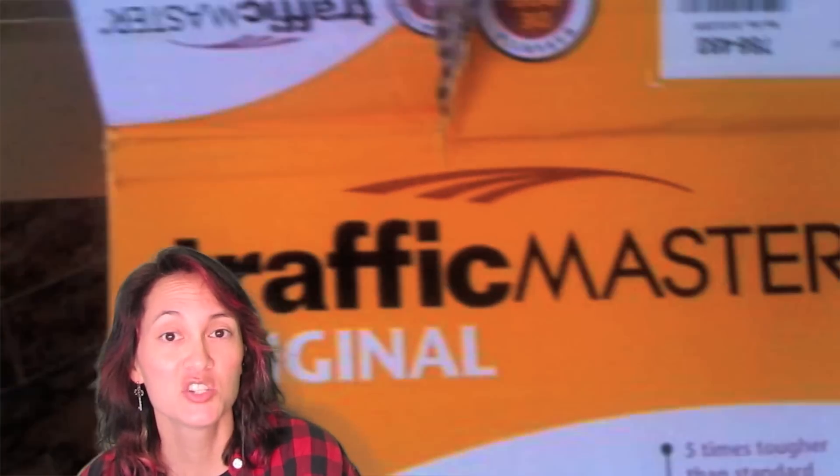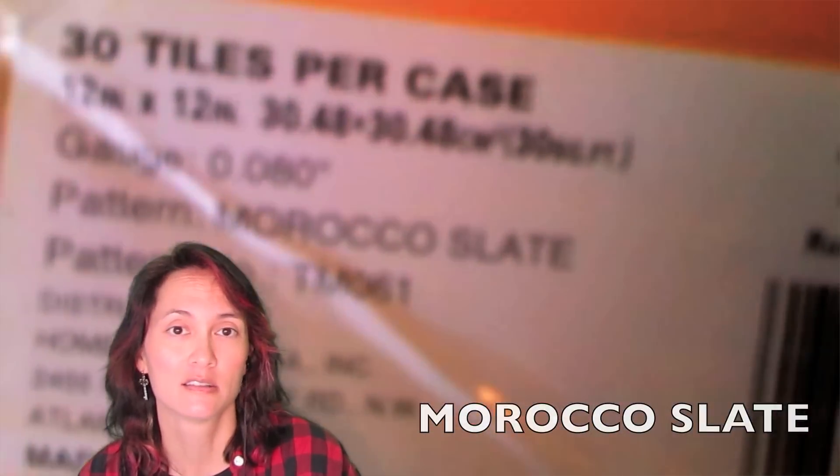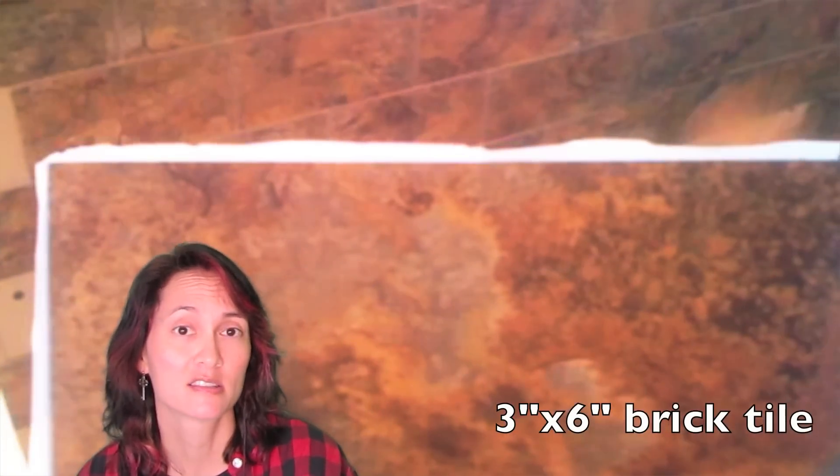Now here you can see I'm starting to put on the brick. Now what I used was actually floor tile. It's called Traffic Master Original, and inside each box there were 30 tiles. This one was called Morocco Slate. Now if you just buy it per tile, it's a little over a dollar each, so it's really very reasonable. So on each one, each brick was three by six inches.